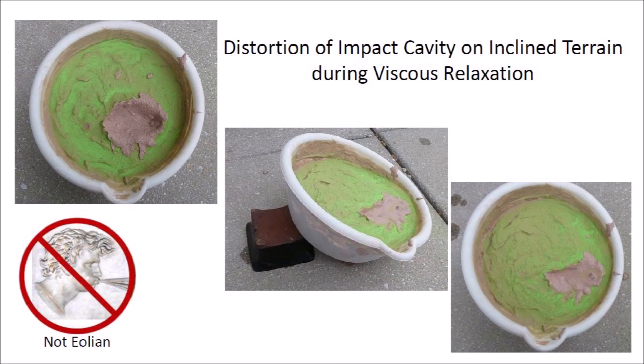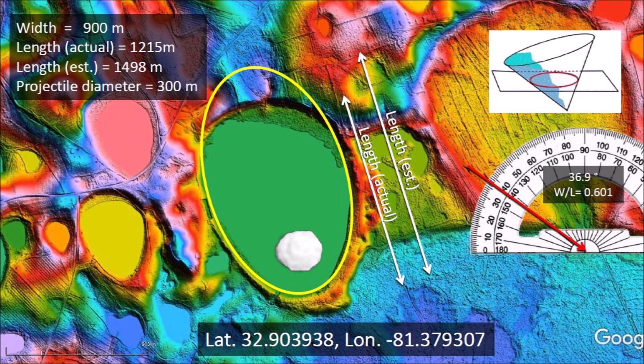Needless to say, this process does not require wind for creating the bays — it is not aeolian. For these distorted bays, we need to fit the ellipse to the southern part of the bay in order to estimate the original length of the bay before viscous relaxation. Once we have the estimated length of the bay, we can calculate the size of the ice projectile that made the bay as one-fifth of the major axis of the ellipse. The estimated length is also necessary to calculate the impact angle.